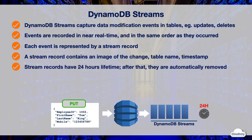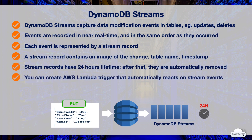Stream records have a lifetime of 24 hours; after 24 hours they are automatically removed from the stream. You can use DynamoDB Streams together with AWS Lambda to create a trigger that executes automatically when an event of interest appears in a stream — for example, to send a welcome email whenever a new customer has been added to the DynamoDB table.